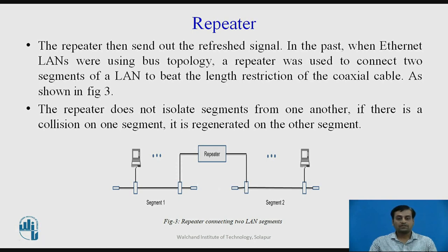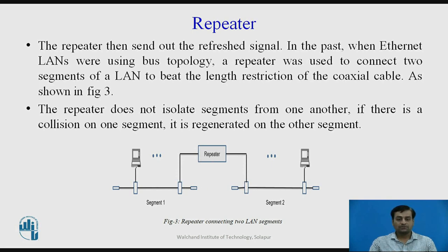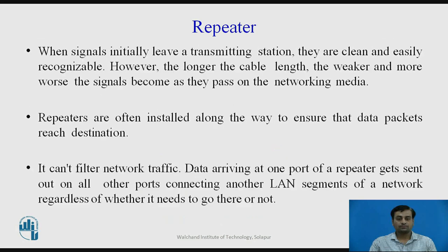The repeater does not isolate segments from one another. If there is a collision on one segment, it is regenerated on the other segment as well. With reference to this diagram, if there is a collision or corrupted data on one segment, it will be forwarded after regeneration by the repeater — it does not isolate segment 1 from segment 2 in case of collisions.